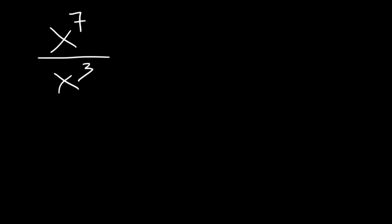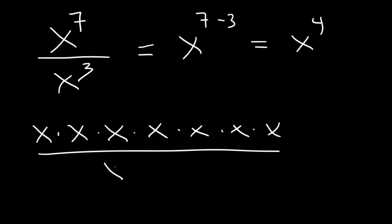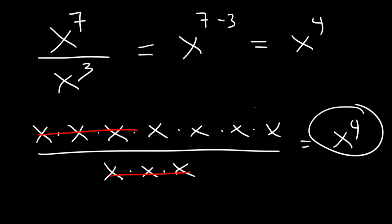Now what about division? If you divide by a common base, you need to subtract the exponents. x to the 7 divided by x to the 3 — we subtract 7 by 3, and that's x to the 4th. x to the 7 is equivalent to 7 x variables multiplied together, and x cubed is x times x times x. So we can cancel 3 x variables, which leaves behind 4 x variables on top. And so, that's the answer.